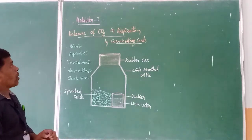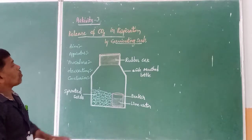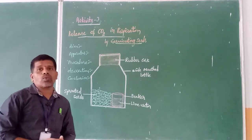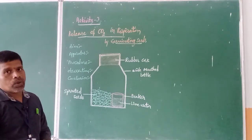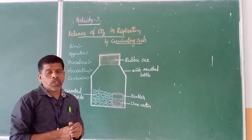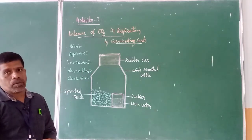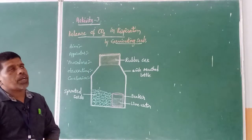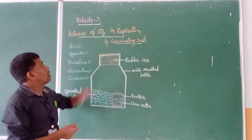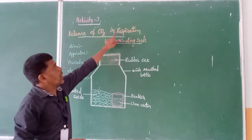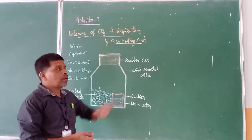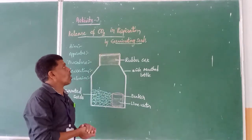Now we come to the next topic. We have an activity. We need to understand the respiration process in plants. One of the products of the plant is seeds. So whether seeds are undergoing the respiration process or not — that we can demonstrate here by a simple activity. Activity number 3: proving carbon dioxide is released in respiration by germinating seeds.